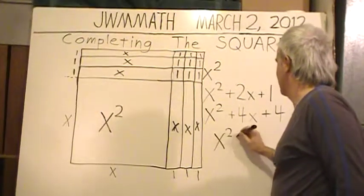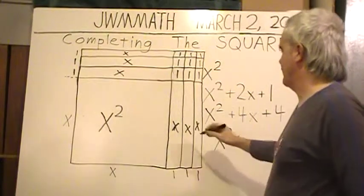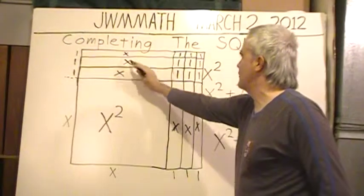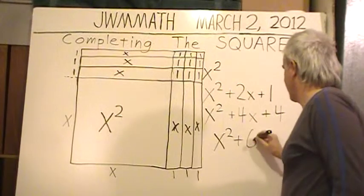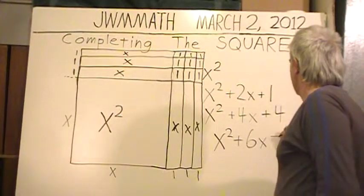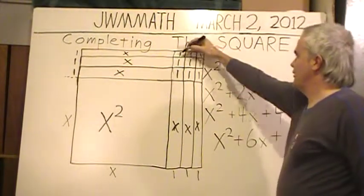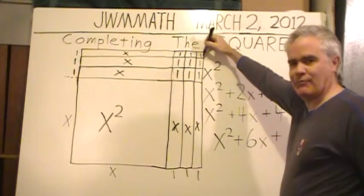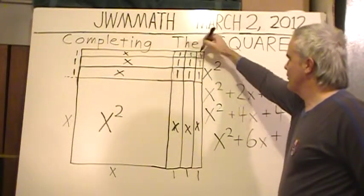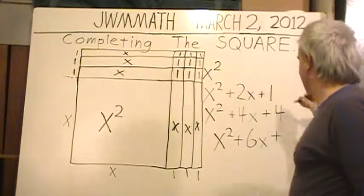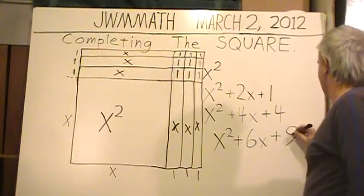So back to our algebraic side, we have the original x squared. How many x's are we adding on? Four of those x's. And how many little squares, the little ones inside? Four. x squared plus 4x plus 4.